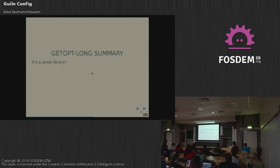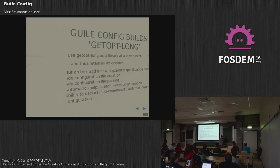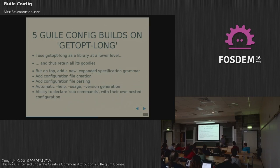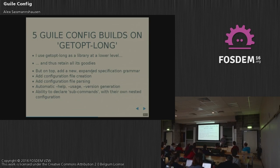Essentially, getopt-long just addresses the first part of my elevator pitch — someone wants a command line option, you add it. That's just the first part of the problem. So what gal.config is supposed to do is build on that, using getopt-long as a lower-level library and retaining its goodies. On top of that it expands the grammar for specification of options, so that some options can be specified in configuration files as well as on the command line. It automatically creates and parses configuration files. You can automatically generate help, usage, and version from your option specification. And you can even declare subcommands — for example, Guix has 'import' or 'package' as subcommands — which in turn can have nested command line flags or further subcommands.